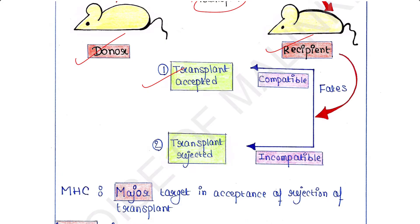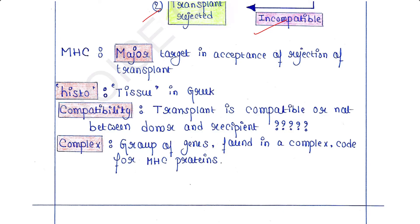The second fate is that the donor transplant gets rejected by the recipient — the body destroys the transplant, meaning the transplant is incompatible between donor and recipient. This compatibility or incompatibility occurs due to MHC. MHC molecules are the major targets in the acceptance or rejection of a transplant. That is why the first word is 'major'.